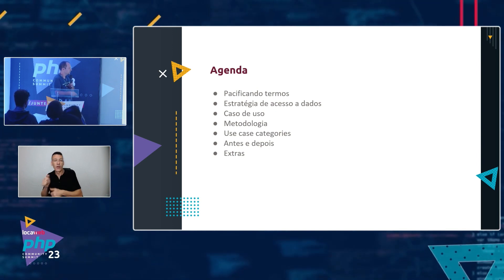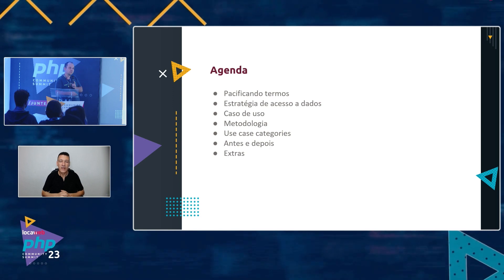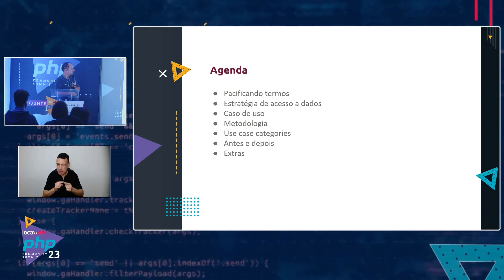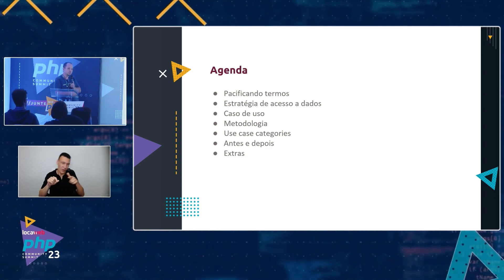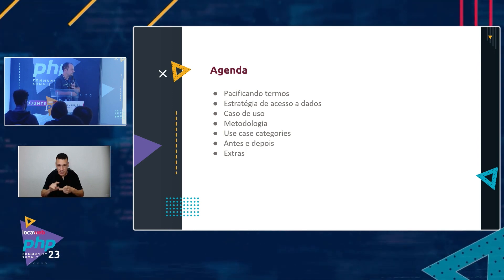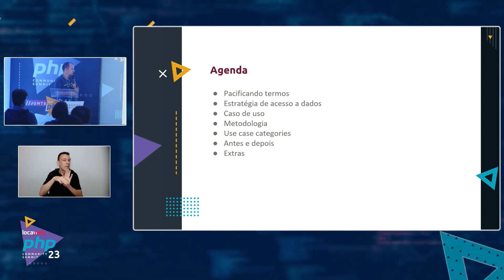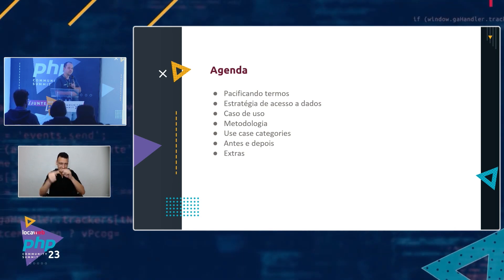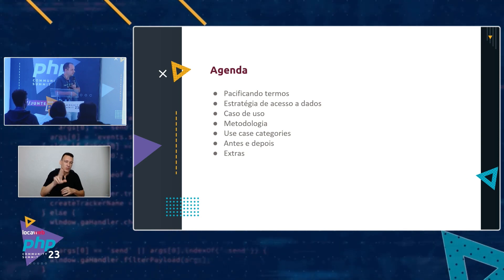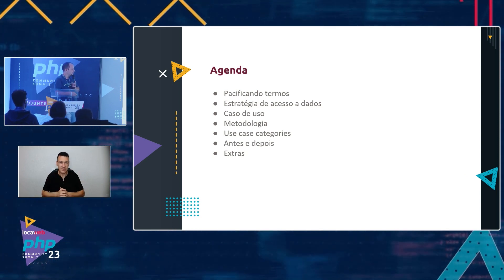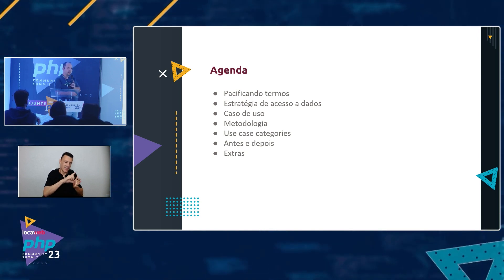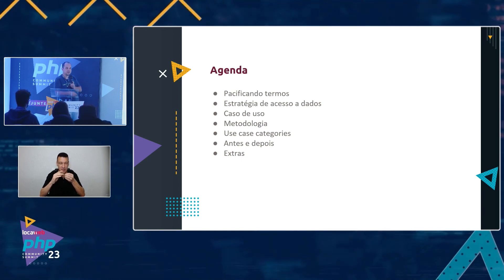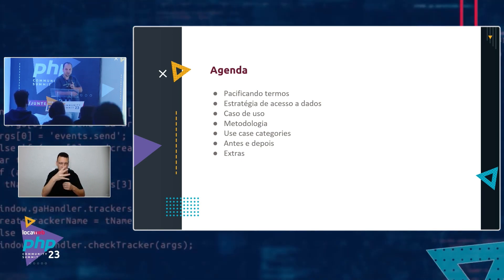In our agenda today, we'll cover: pacification of terms — a comparison between relational and non-relational, specifically about MongoDB to facilitate the process. Then data access strategy, the use cases we used, the methodology we follow for non-relational modeling, a use case with categories — the main patterns we apply — the before and after of a non-relational model, and some extras for those who want to go deeper on the topic.